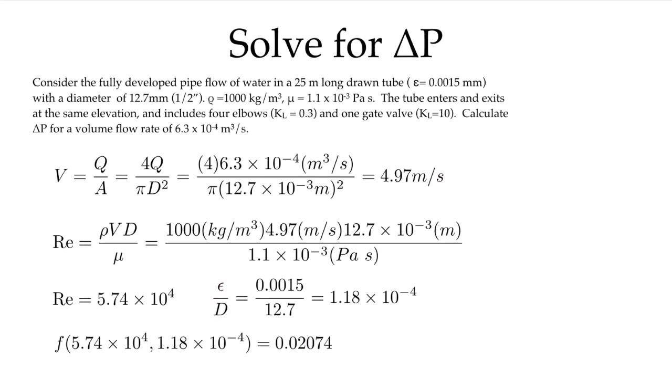So when I calculate the relative roughness ratio, I have to make sure I use my diameter in millimeters as well, so this is a non-dimensional ratio. I have to have the units canceling out: 0.0015 mm divided by 12.7 mm is a relative roughness ratio of 1.18×10⁻⁴.